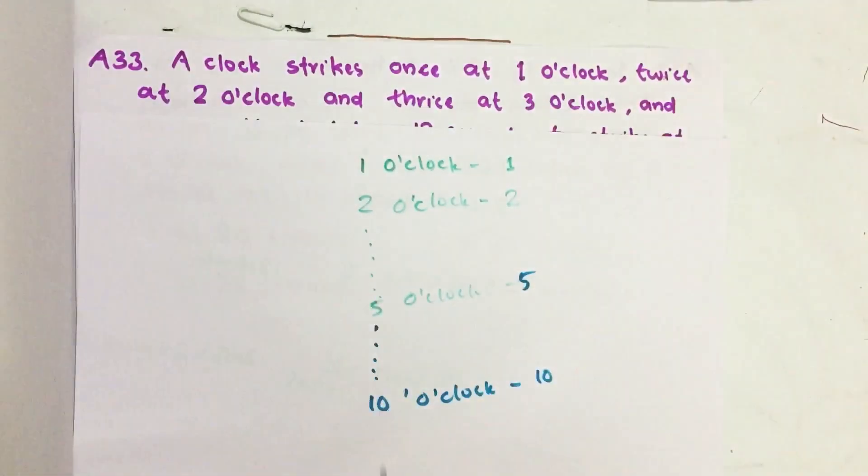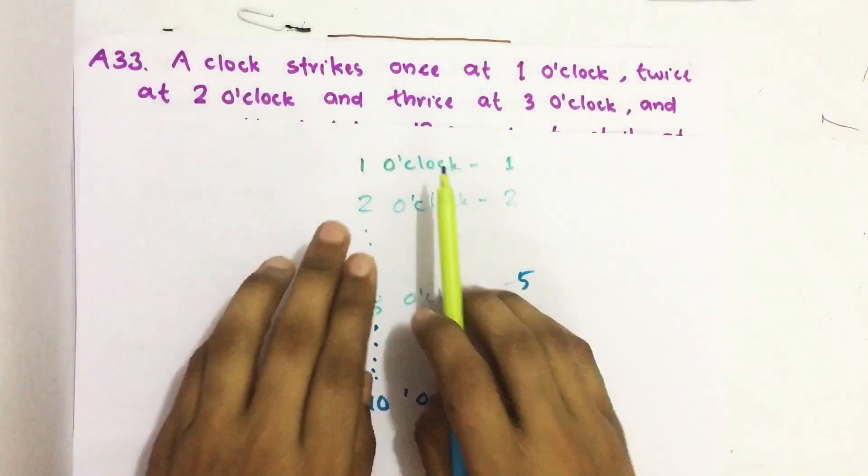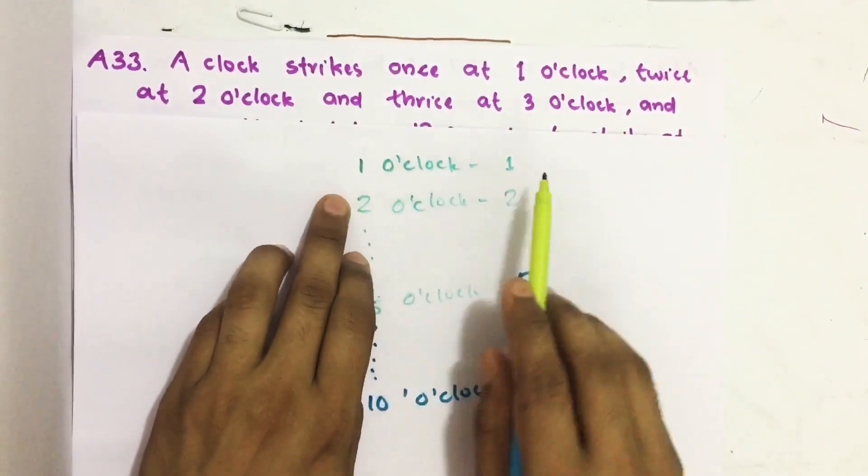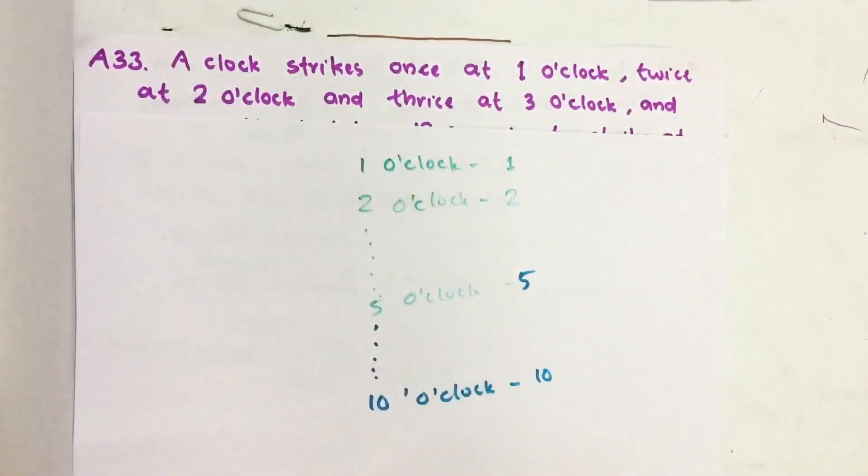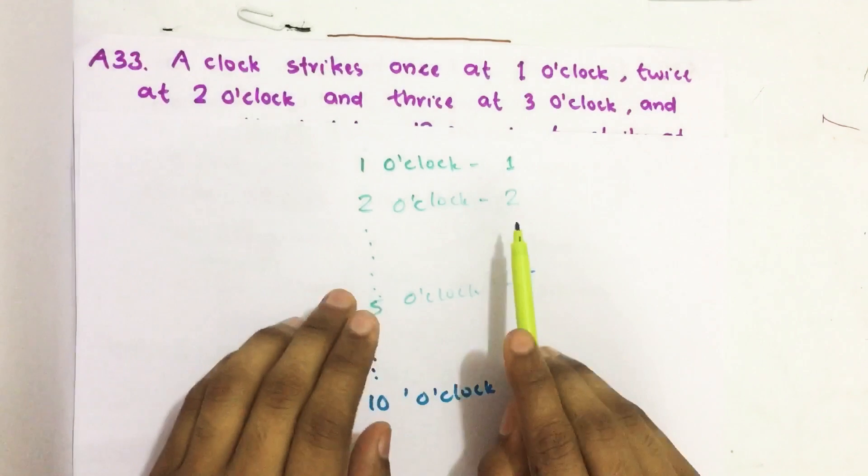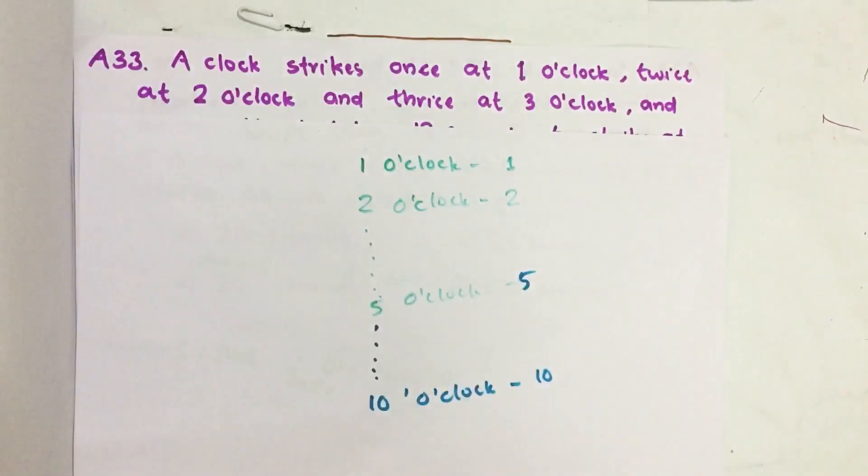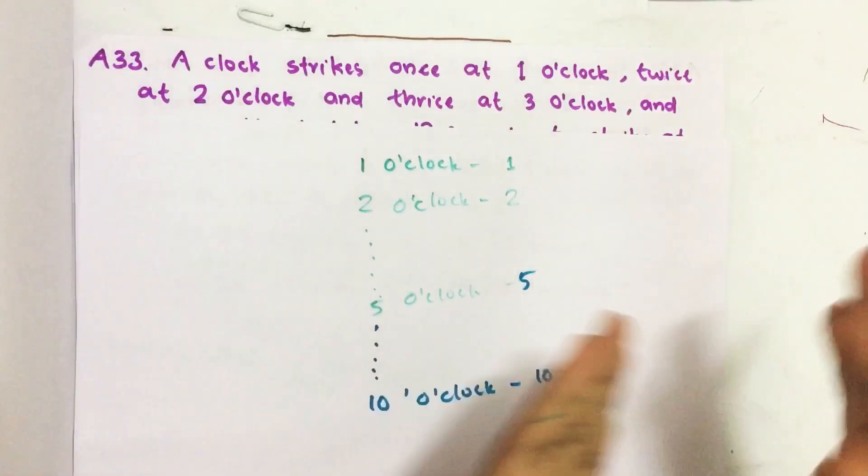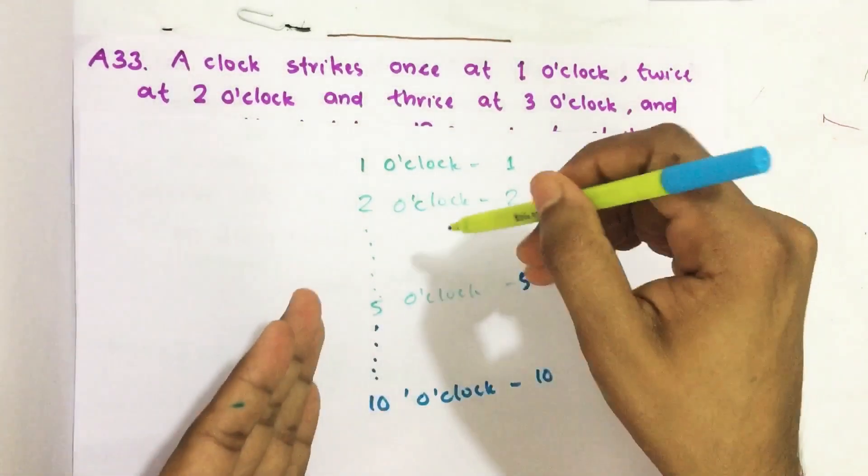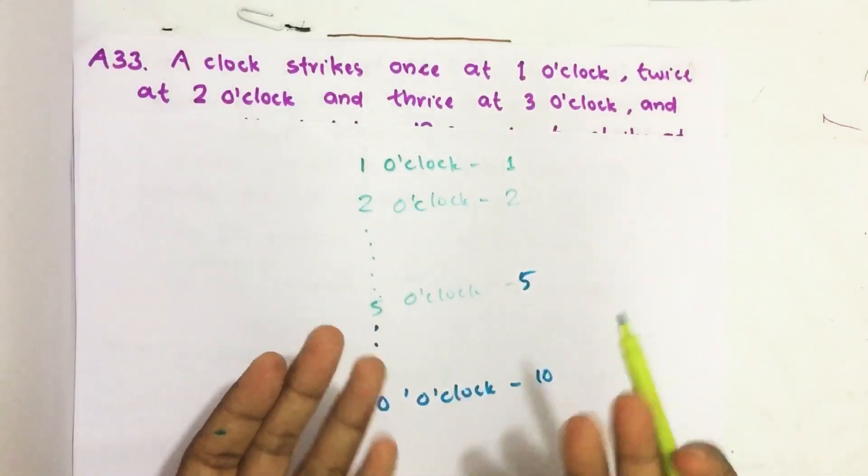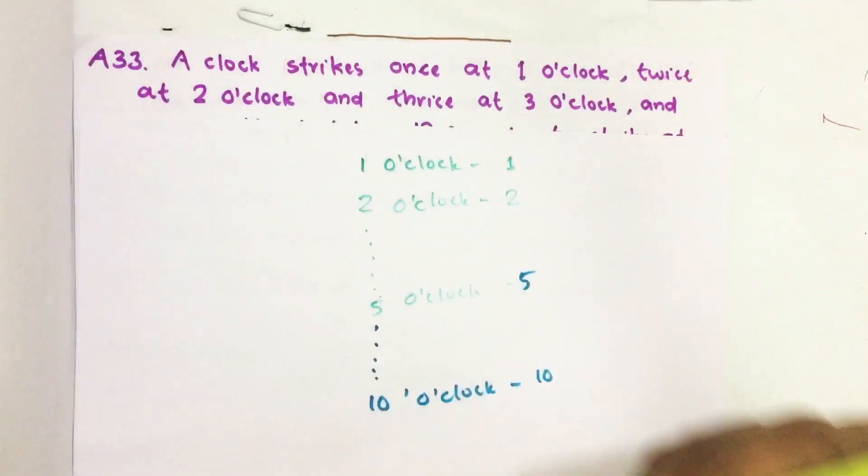So here there is a clock. It strikes once when it is 1 o'clock, twice when it is 2 o'clock, thrice when it is 3 o'clock, 4 times when it is 4 o'clock and 5 times when it is 5 o'clock and so on.